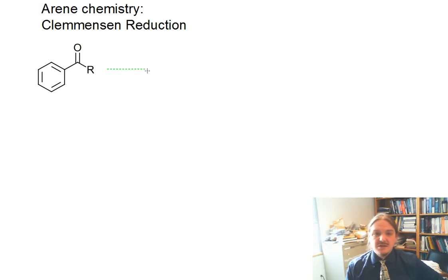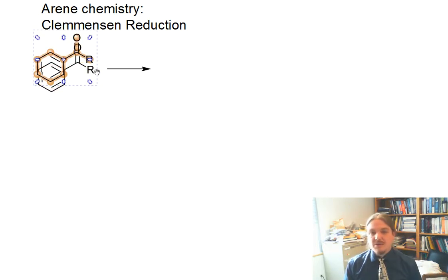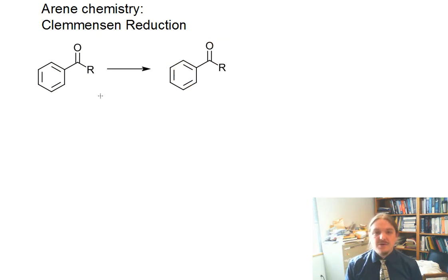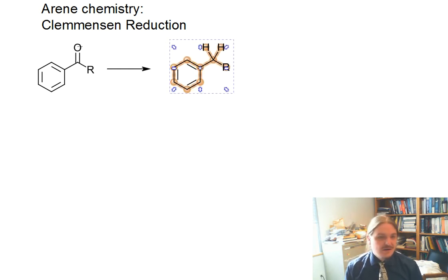The Clemmensen reduction is a reaction that converts an aromatic ketone or aldehyde, where the carbonyl group needs to be next to the aromatic ring. We'll reduce this compound down to the hydrocarbon, replacing the carbonyl group with single bonds to hydrogen.